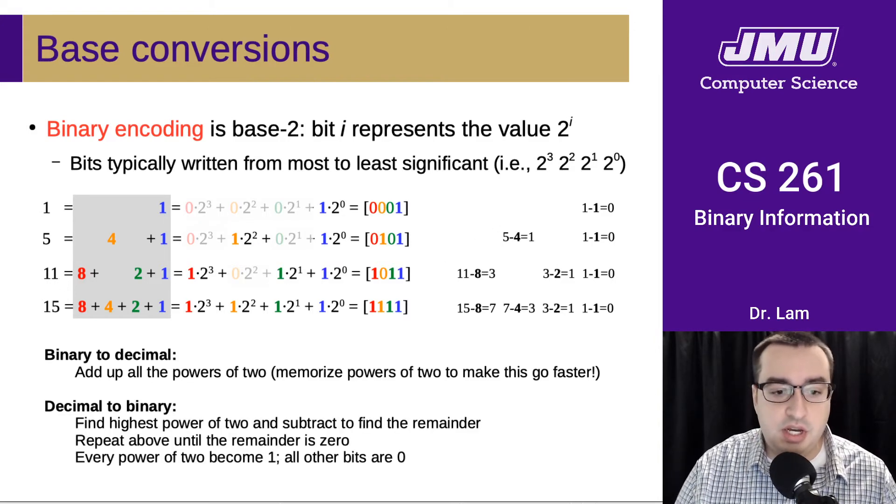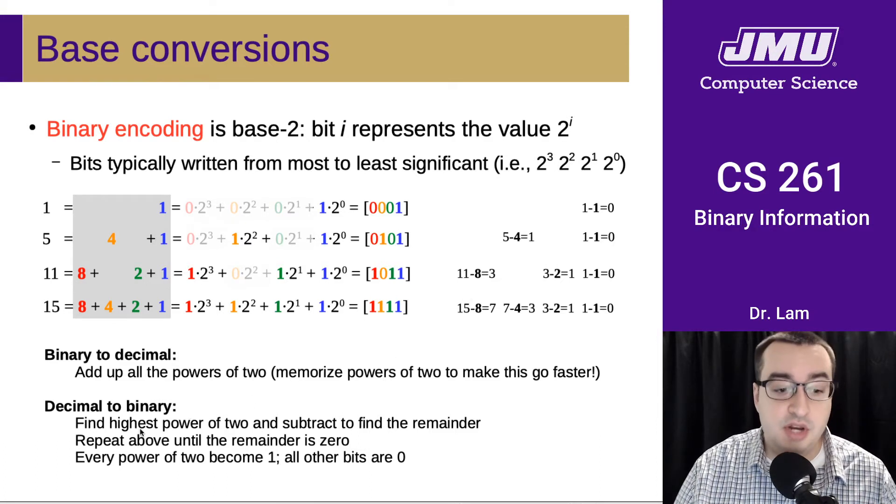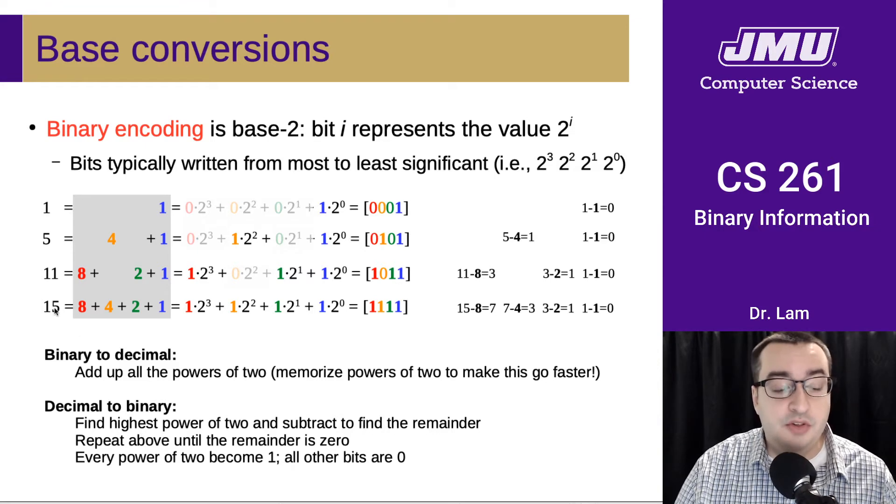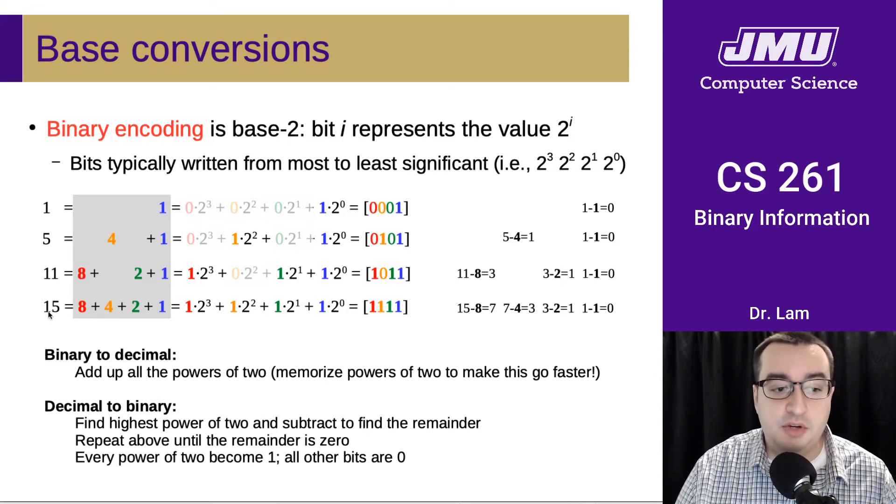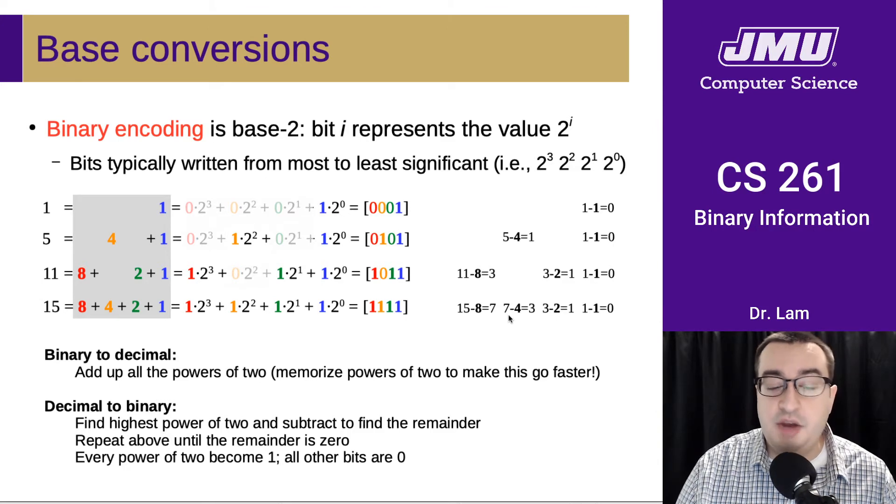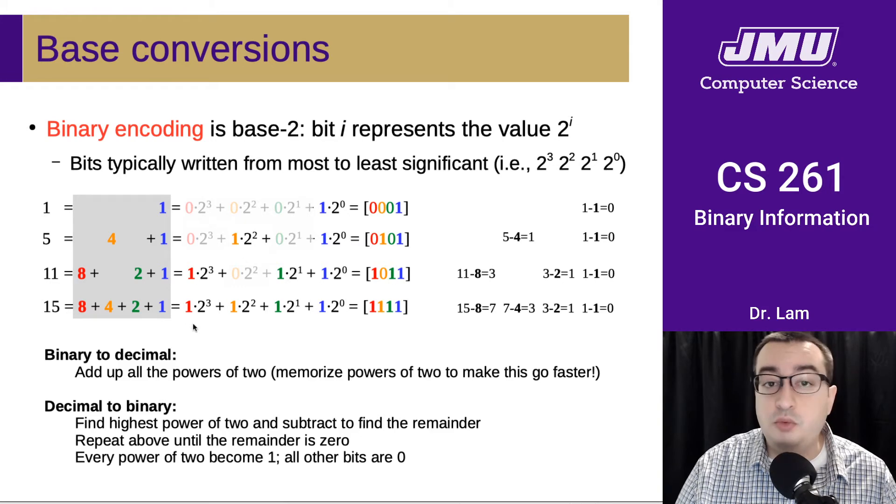Going the other direction can be a little more difficult. You have to find the highest power of 2 in your number, then subtract to find the remainder. For instance, to convert 15 to binary, we find the highest power of 2, which is 8. We don't have 16 to work with, so we use the next lowest power. We take 15, subtract 8, that gives us 7. We find the highest power of 2 we can subtract, which is 4, and keep continuing until we get to 0.